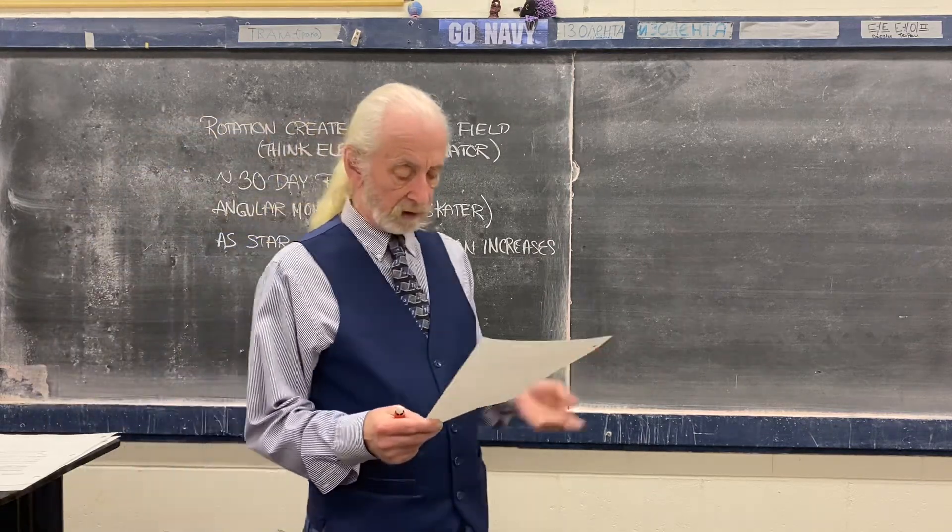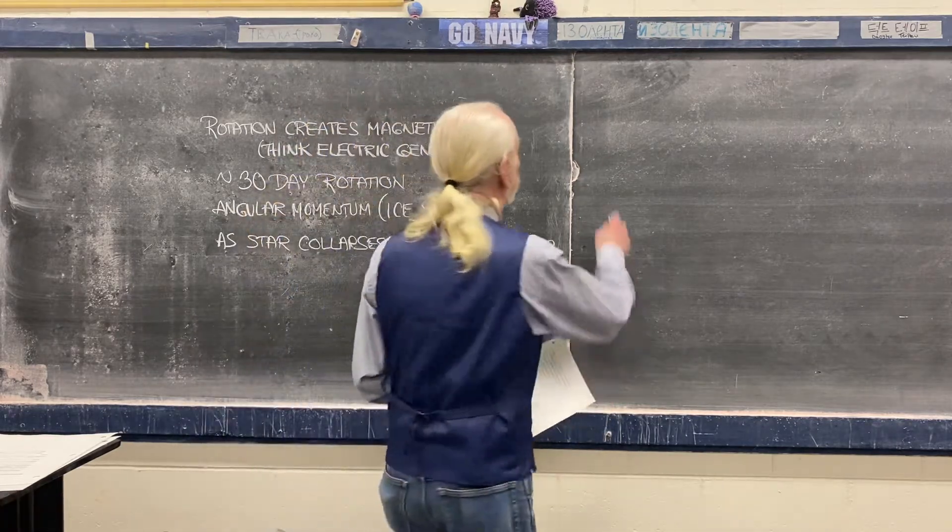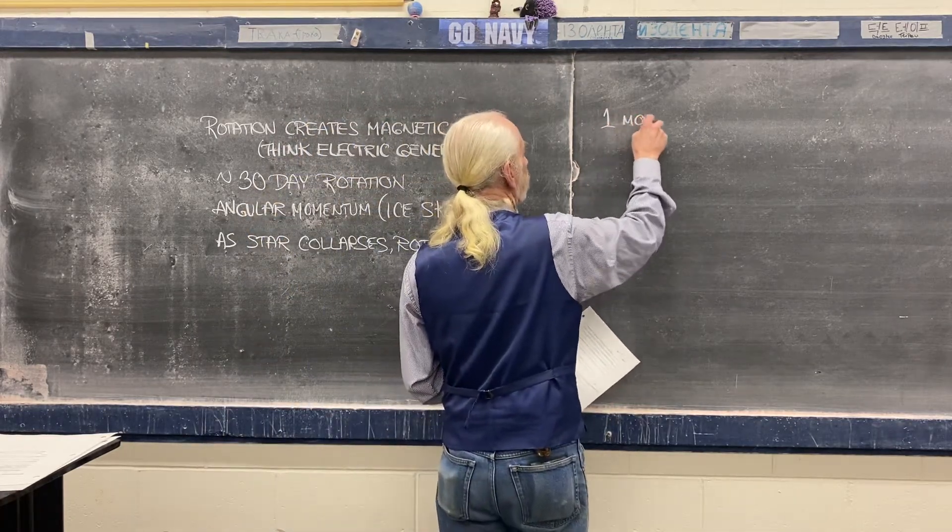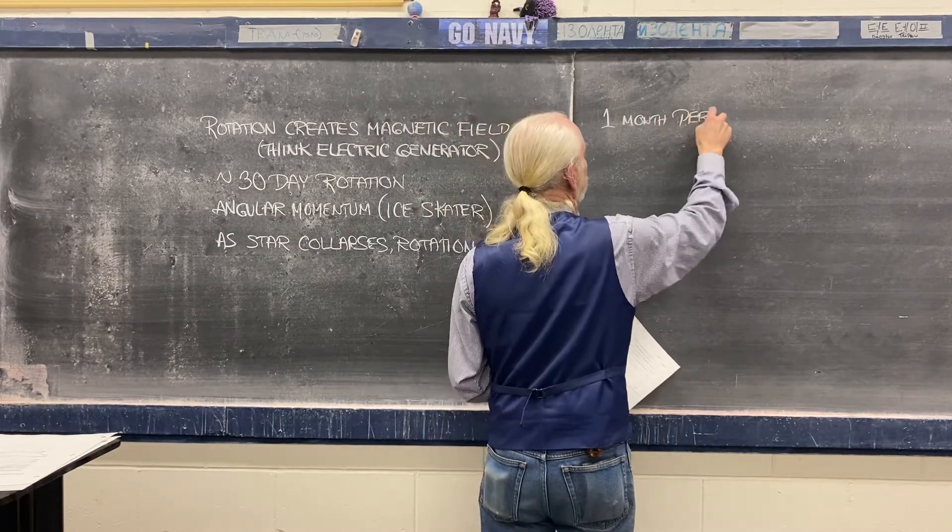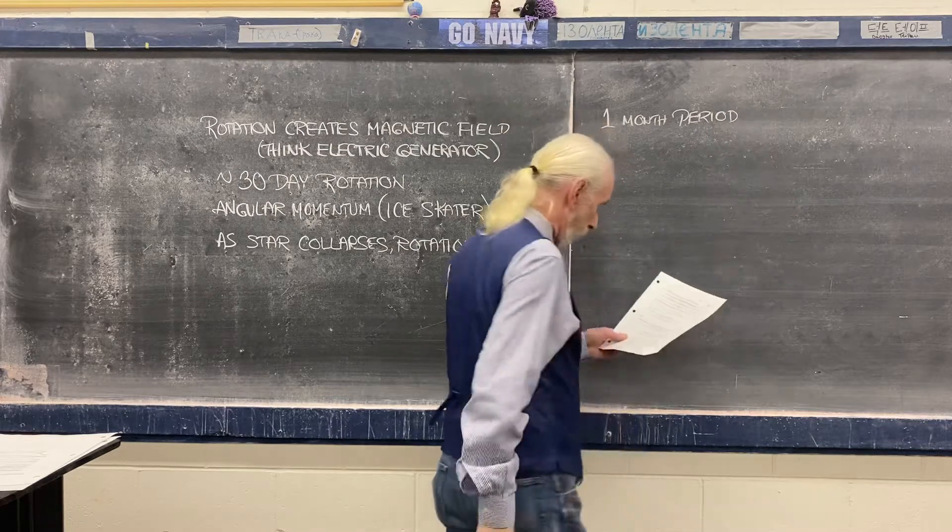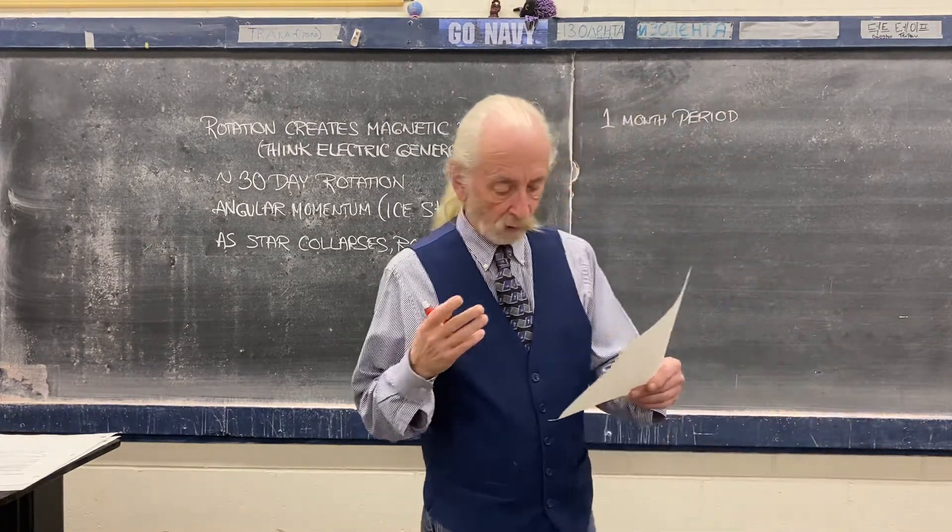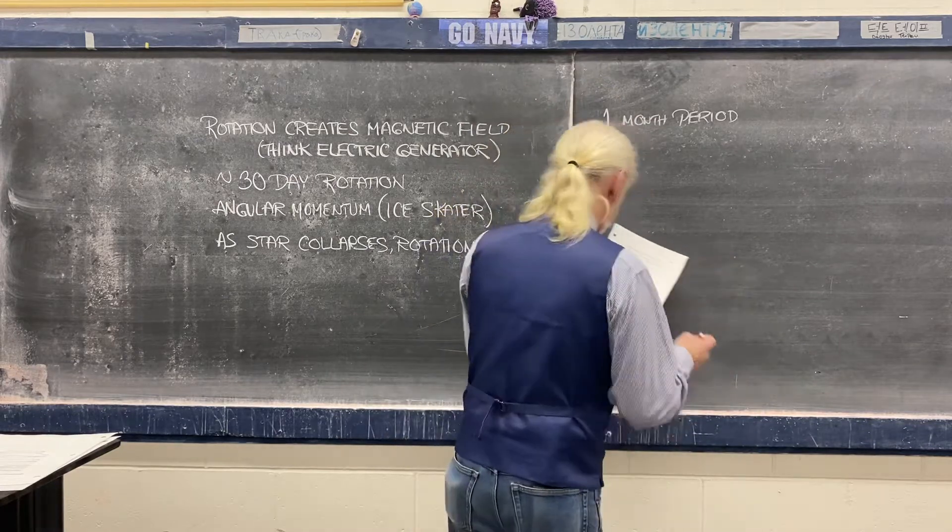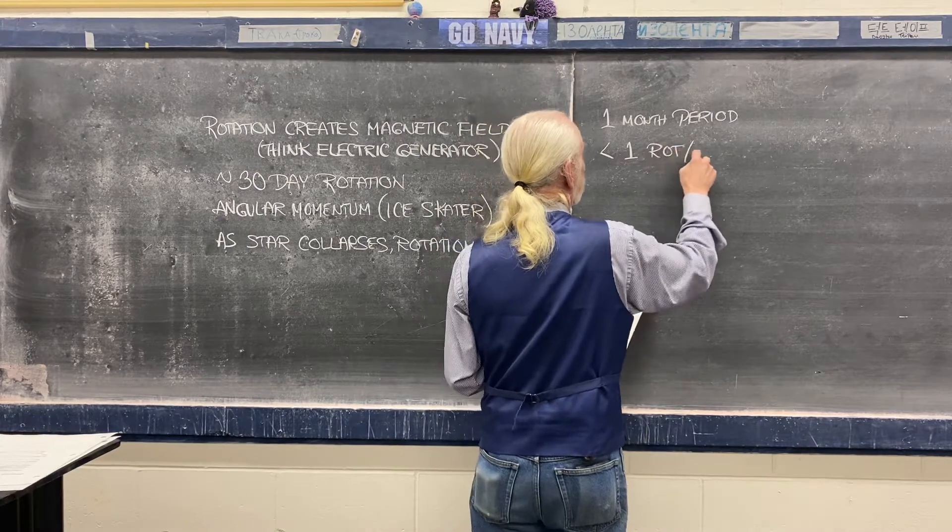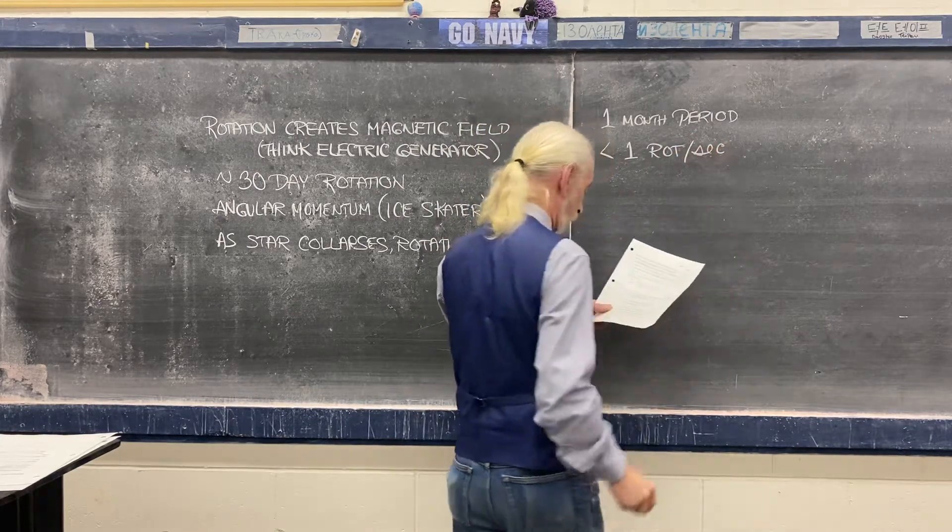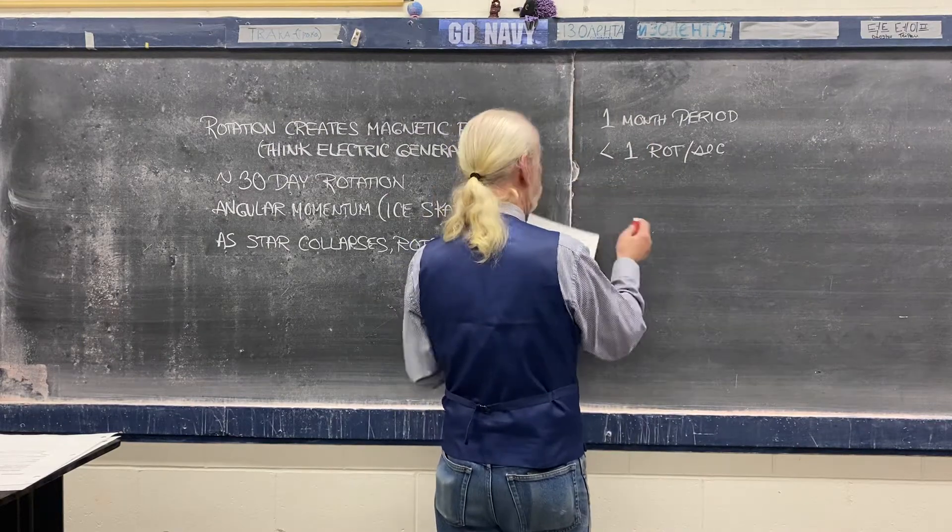If you had a main sequence star rotating at roughly a one-month period, and it collapses to less than one rotation per second at neutron star size, which is roughly 20 kilometers.